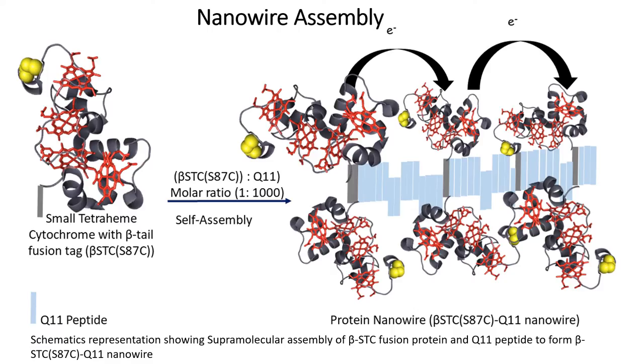I then self-assemble this fusion protein and the Q11 peptide in a ratio of one to one thousand to produce our protein nanowires.